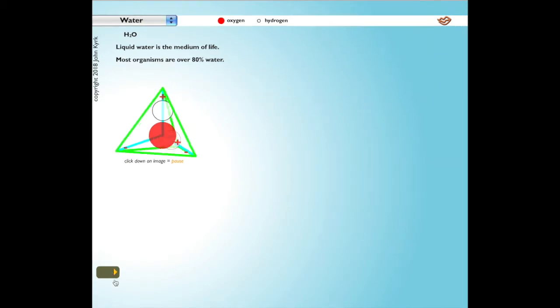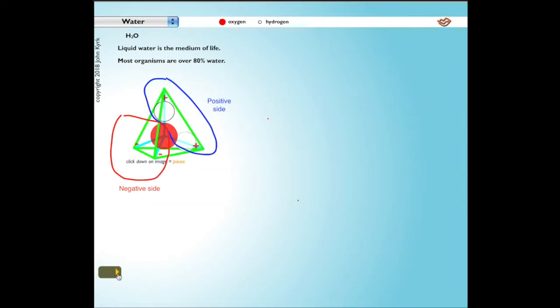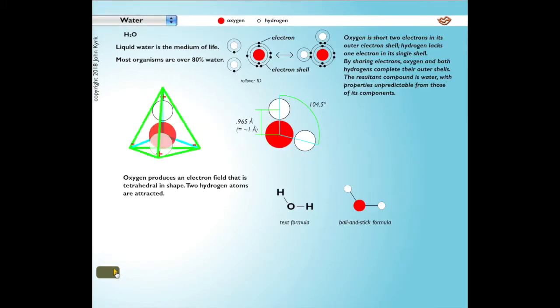This creates a polar molecule with local concentrations of positive and negative charge. The hydrogen's single electron sits in the lowest energy shell, which holds two electrons when it is complete. The oxygen's eight electrons are distributed with two in the inside shell and six in the outer shell, which holds eight electrons when it is complete. So oxygen is short two electrons in its outer shell. Hydrogen lacks one electron in its single inner shell. By sharing electrons, oxygen and both hydrogens complete their outer shells. The resulting compound is water, with properties unpredictable from those of its components.